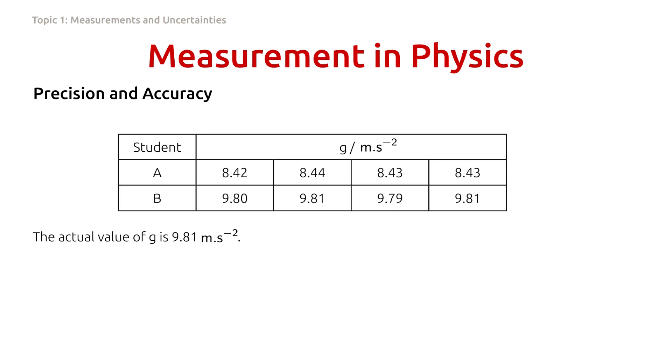Imagine now we have two students here, A and B, measuring the gravitational acceleration g. The actual value of g on the surface of the earth is approximately equal to 9.81 meters per second squared. They measure this quantity four times and record them in this table.